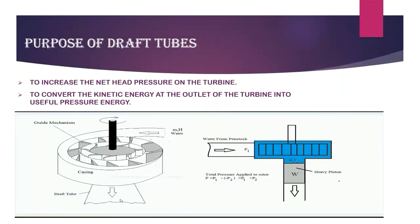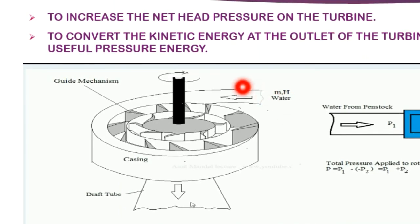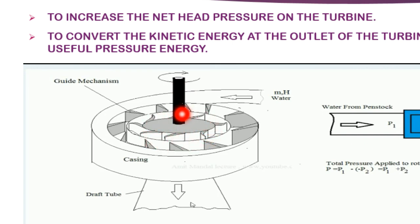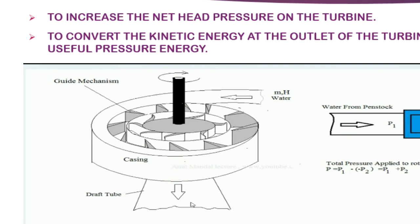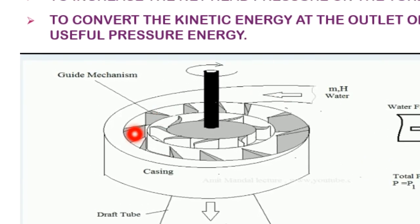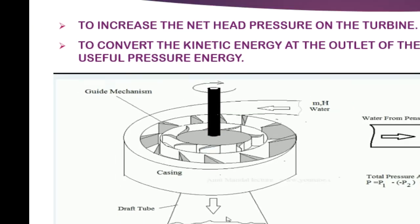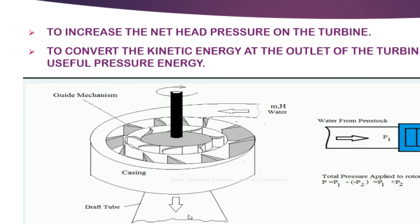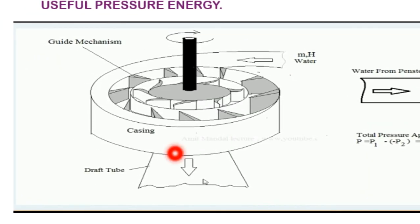The purpose of the draft tube: in a reaction turbine such as the Francis turbine, water passes through the penstock, hits the runner radially, rotates the shaft, then exits. The draft tube increases net head and turbine efficiency by creating negative pressure at the runner exit. At the runner outlet, pressure is negative — so P1 minus (negative P2) equals P1 plus P2 — giving a larger net pressure difference, increasing efficiency.